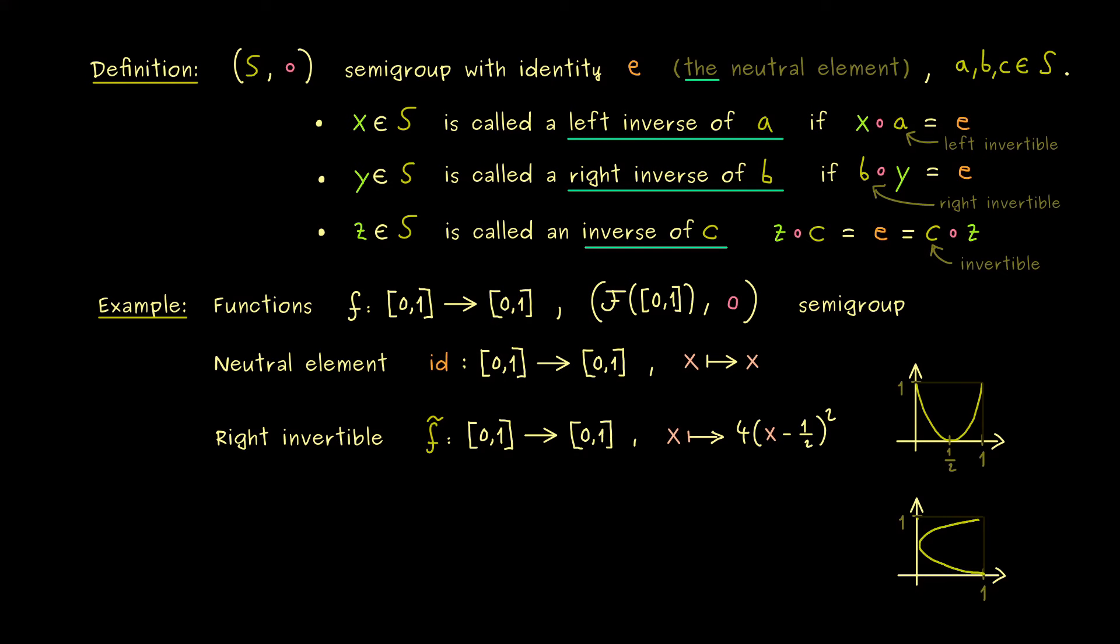However obviously this does not define a function and we have to get rid of some parts to get the uniqueness in the x variable. And one immediate possibility is to just ignore the whole lower part here. And then you might already know what we get is a square root function.